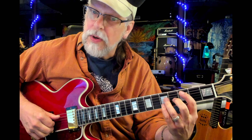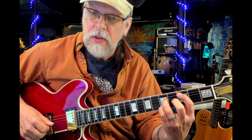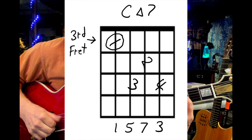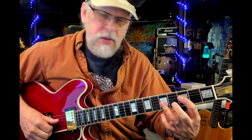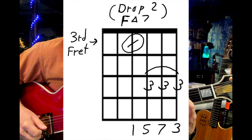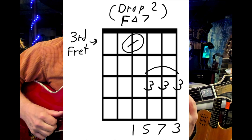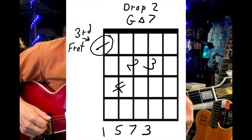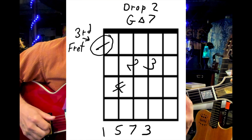Drop two chords take the second note from the top. For instance, if we have this chord here, we do the arpeggio backwards and drop that second note from the top — in this case the C — drop it down to that C, then play the rest of those tones. You have a C major seven. That's a drop two C major seven. And then this is a drop two F major seven, and this is a drop two G major seven. Before we had a drop three — this is a drop two.